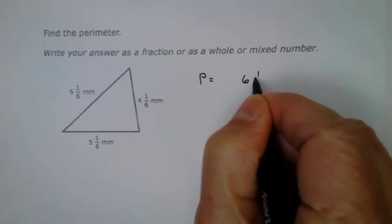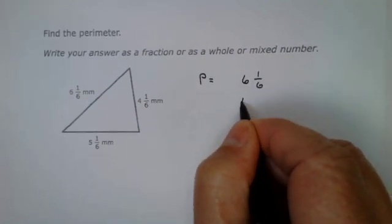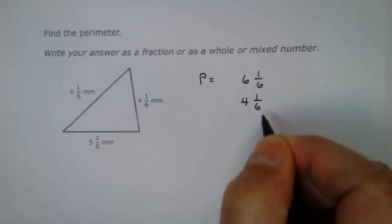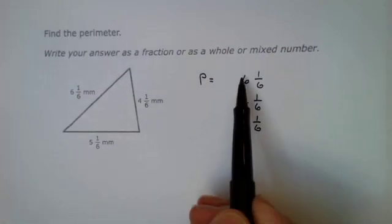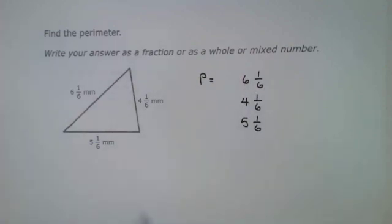So I'm going to take 6 and 1/6. I'm going to add it to 4 and 1/6 and add it to 5 and 1/6. What I'm going to do is add the whole numbers up, then add the fractions together.